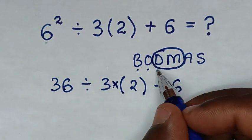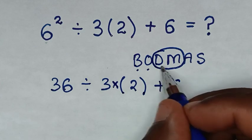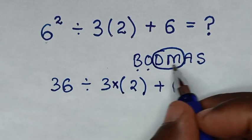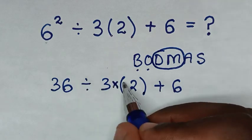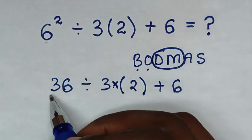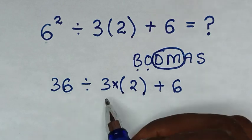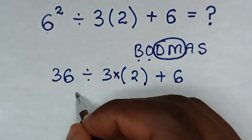Now we start with this group of division and multiplication according to what starts first. So it starts first division, then multiplication. So we deal first with this division of 36 divided by 3, which is 12.